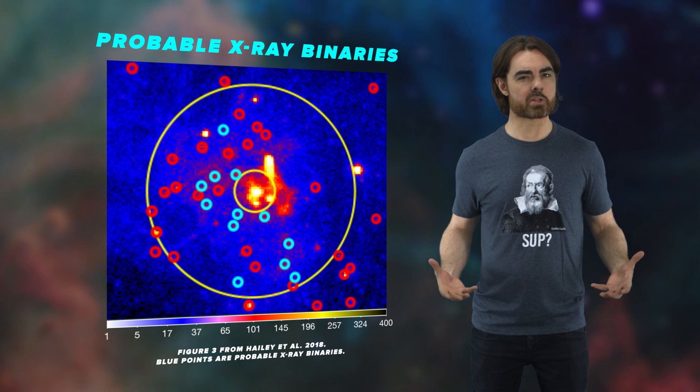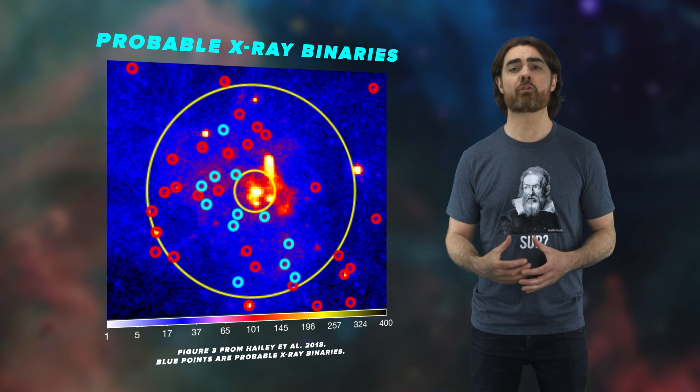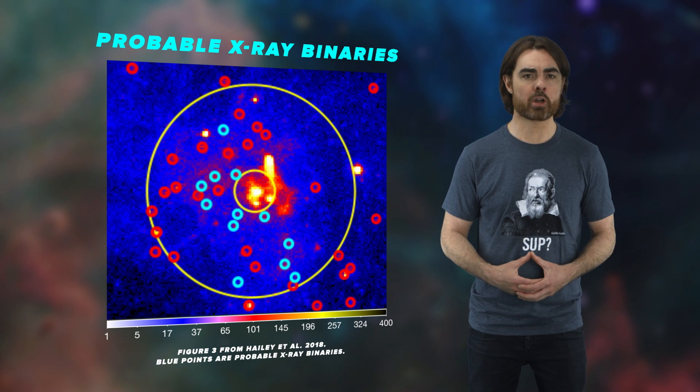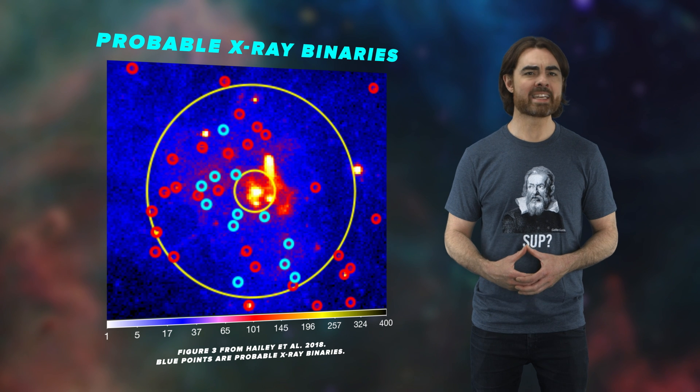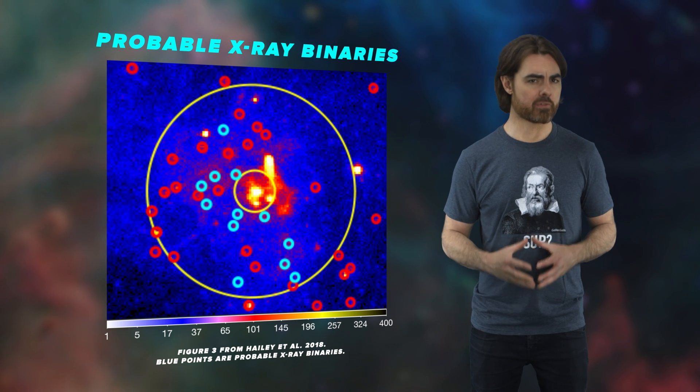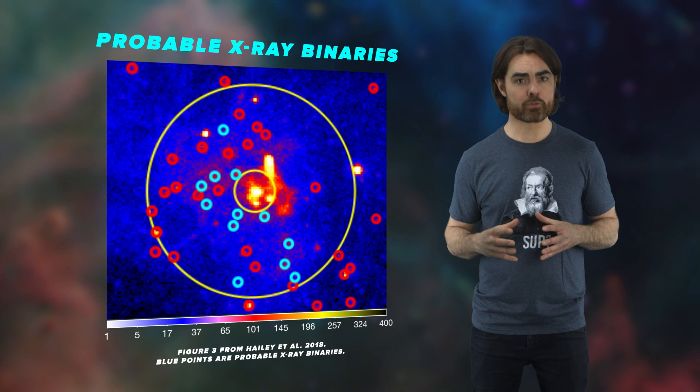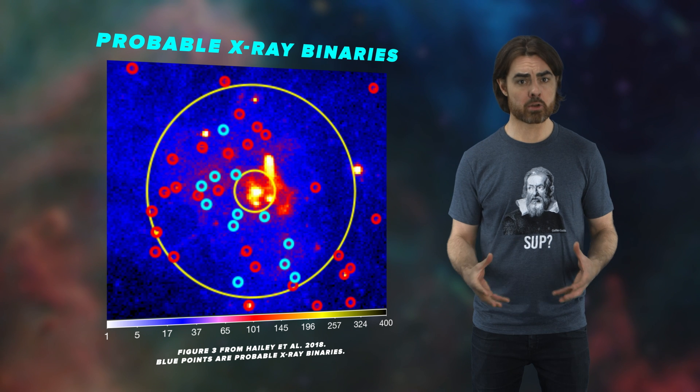Now, 13 doesn't sound like a swarm. But remember, only a small fraction of black holes are seen as x-ray binaries. The researchers extrapolate that there would need to be at least hundreds of stellar mass black holes in the central few light years in order to get these 13 x-ray binaries.